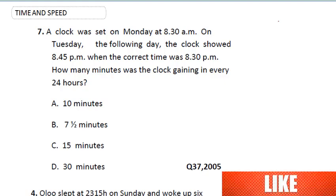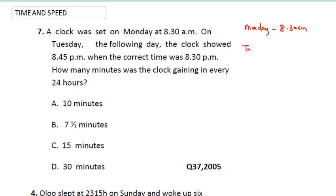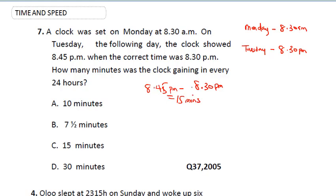Notice it happened on Monday at 8:30 a.m. On Tuesday, the correct time was 8:30 p.m., but the clock was showing 8:45 p.m. The difference between 8:45 p.m. minus 8:30 p.m. is 15 minutes. So let's note this down.